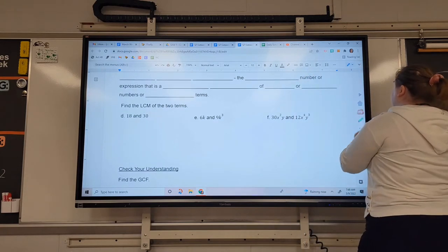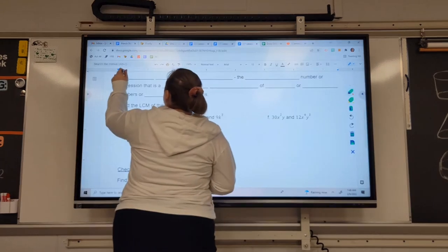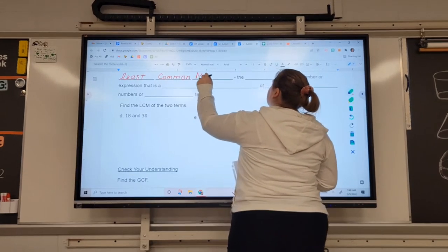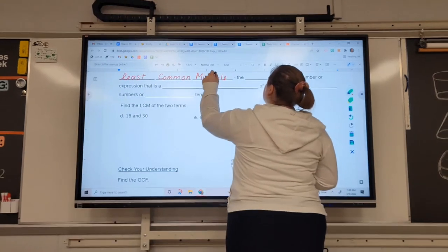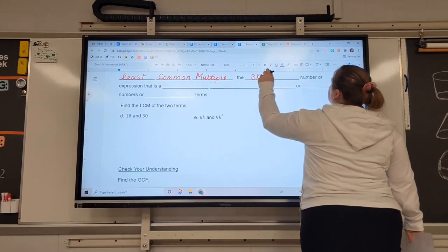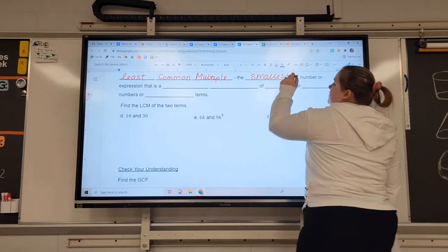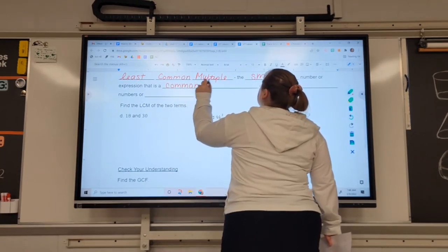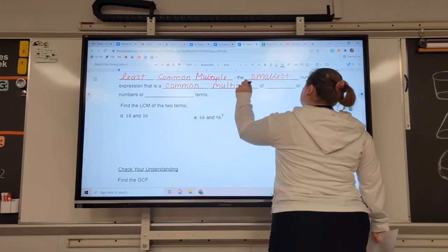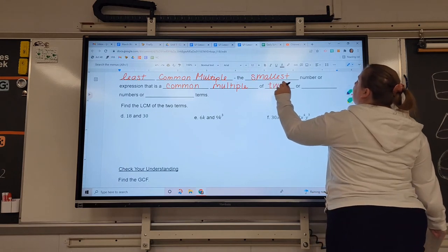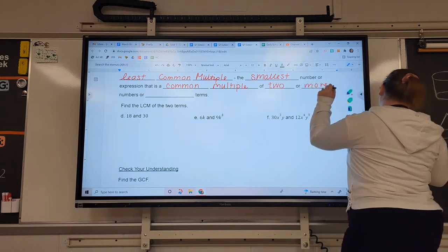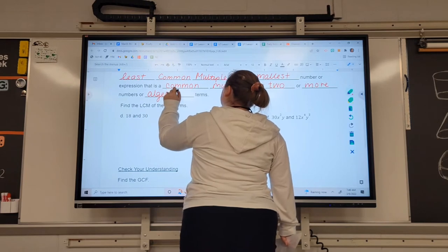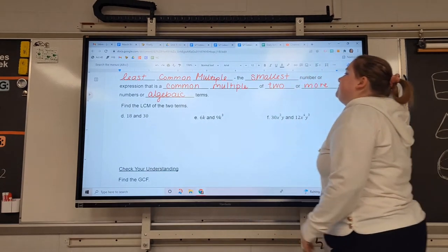After greatest common factor, we have least common multiple. Least common multiple. Make sure you get this definition here. The least common multiple is the smallest number or expression that is a common multiple, go figure, of two or more numbers or algebraic terms.